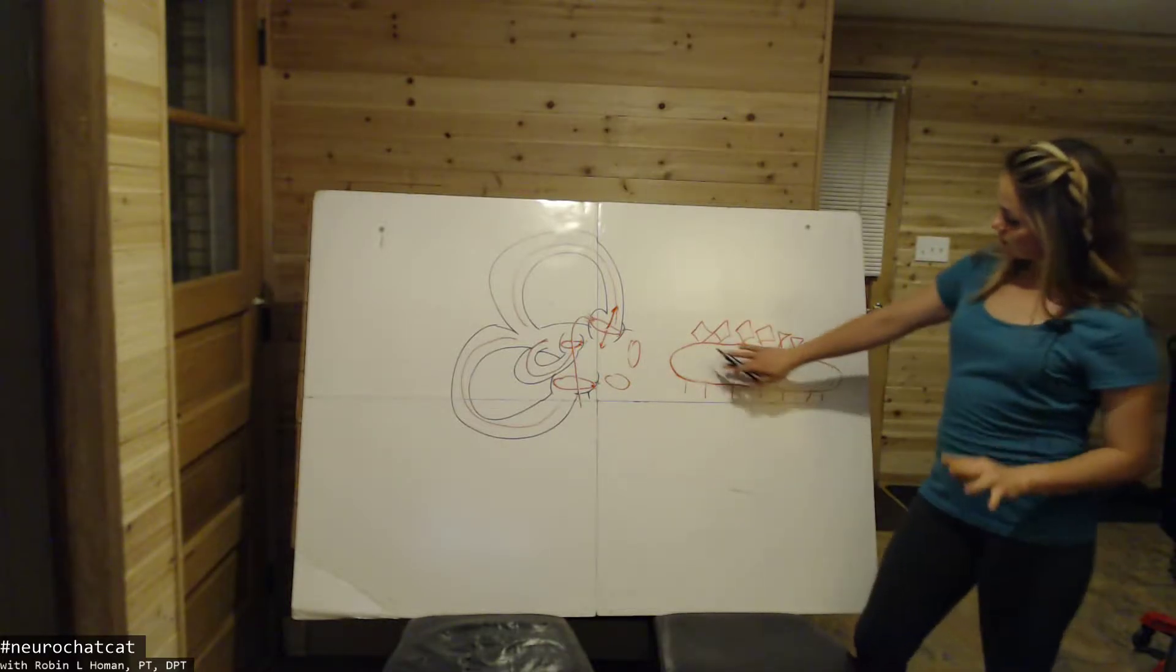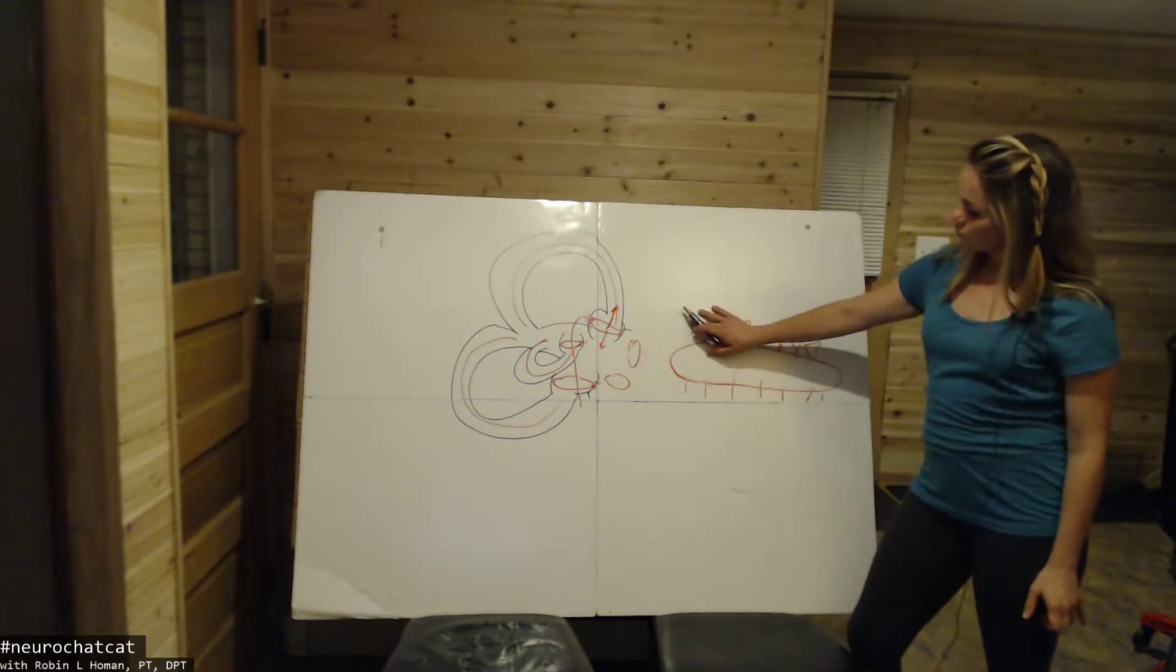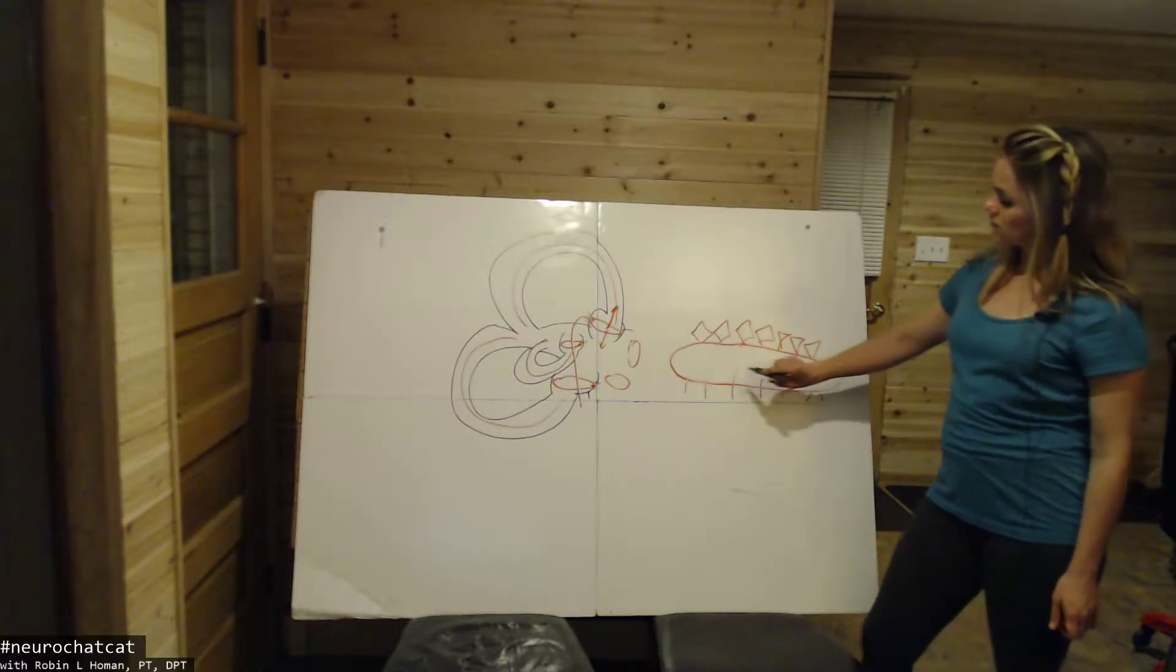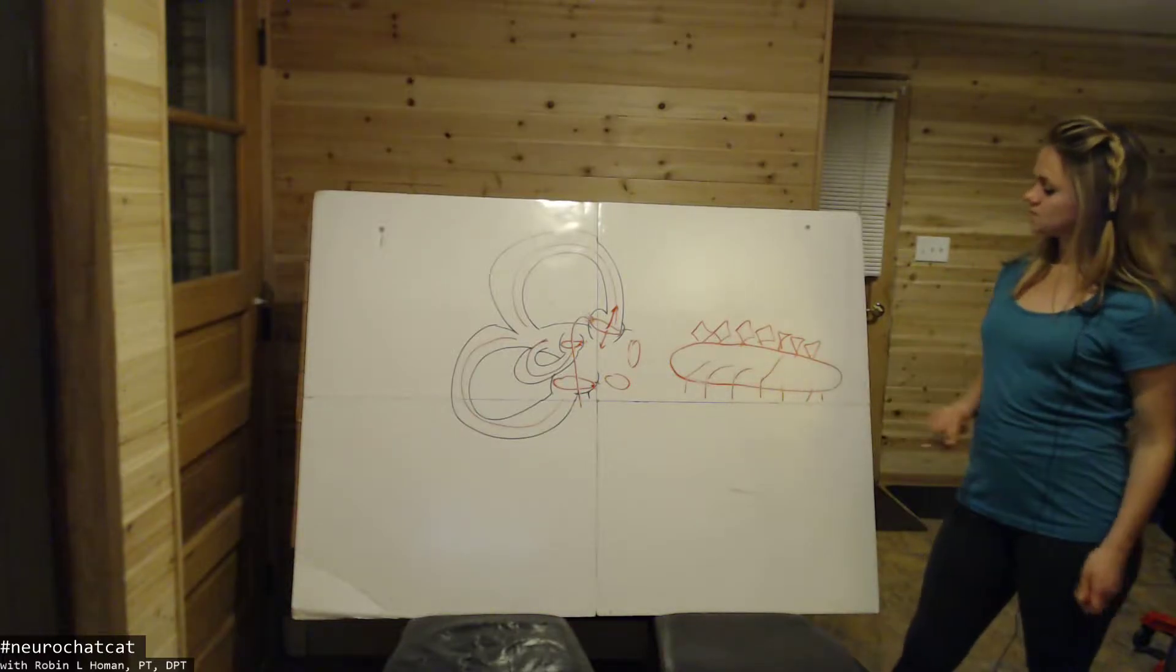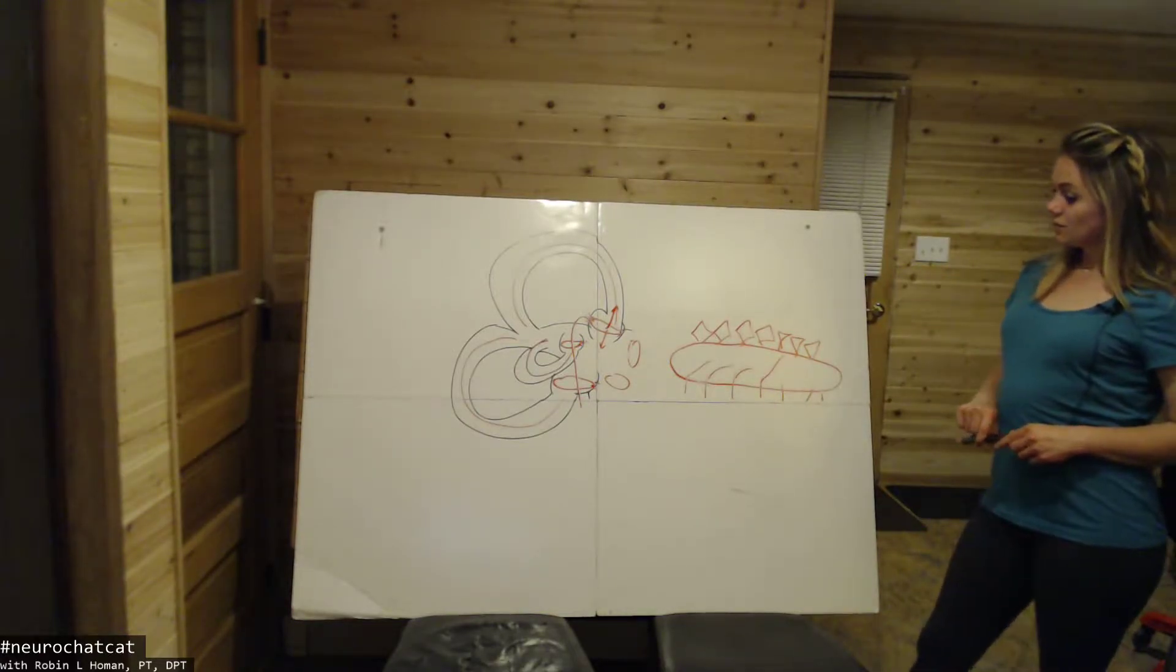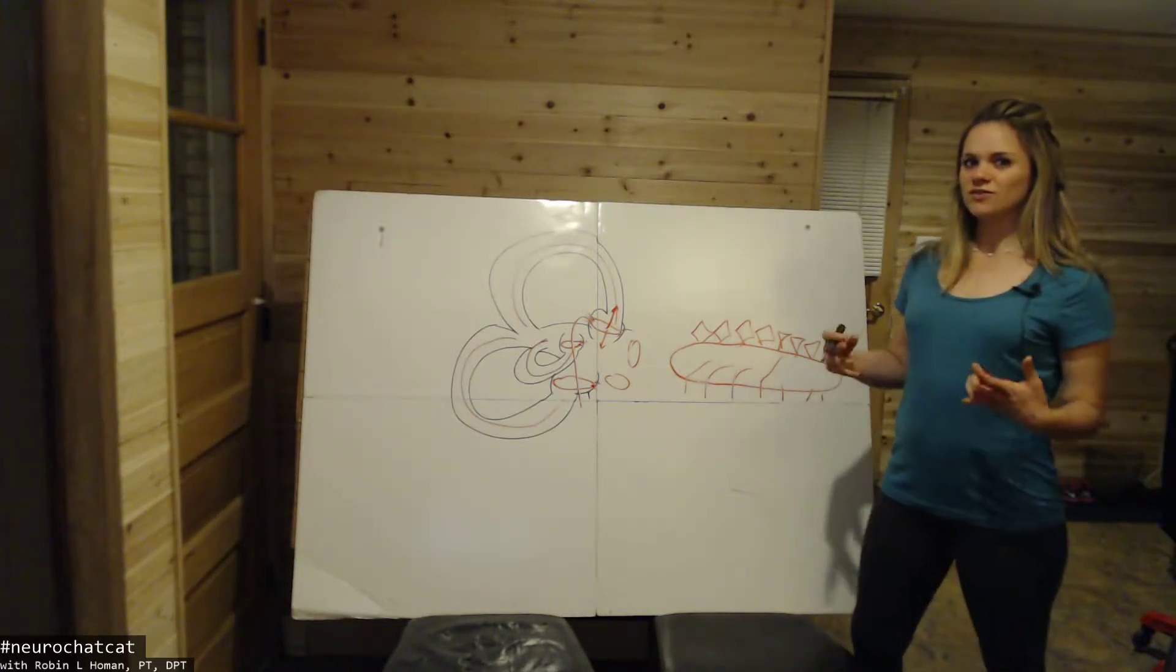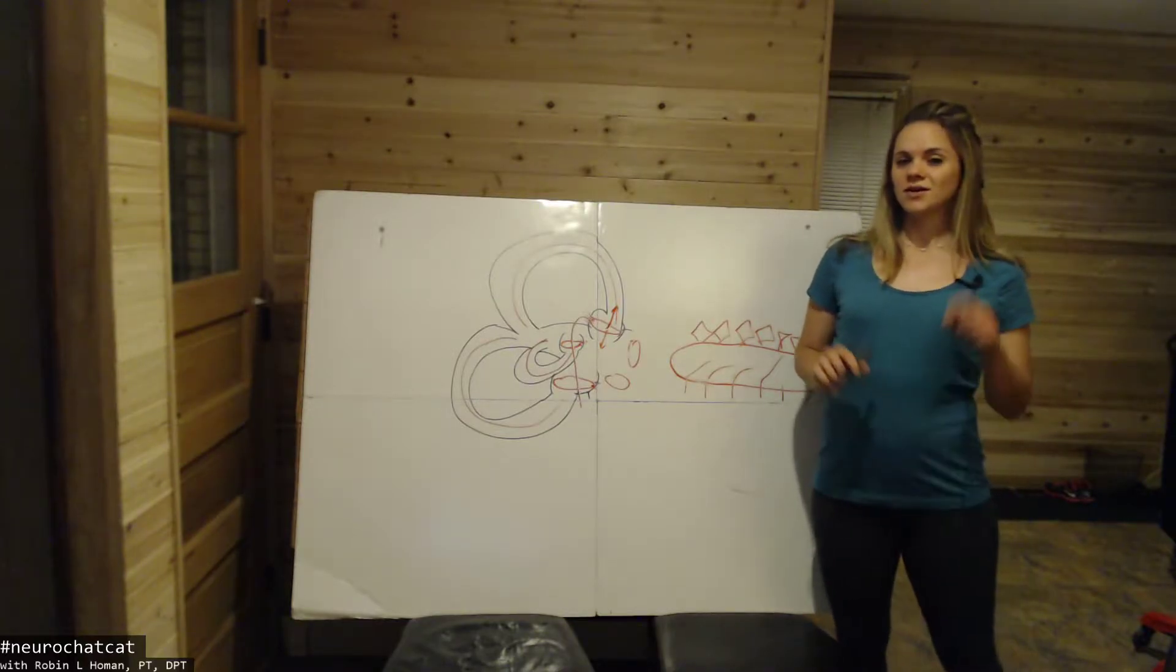So you can see that this jelly-like matrix, because of the weighted system we have here, is going to deflect these hair cells backward. And the more you deflect it back, the more excited that nerve gets. Now interestingly.